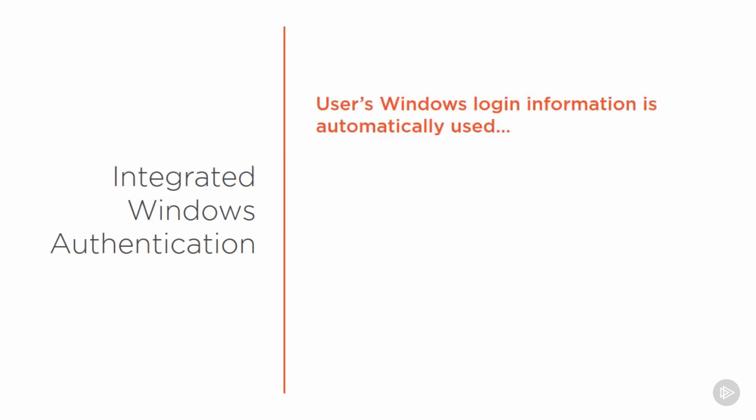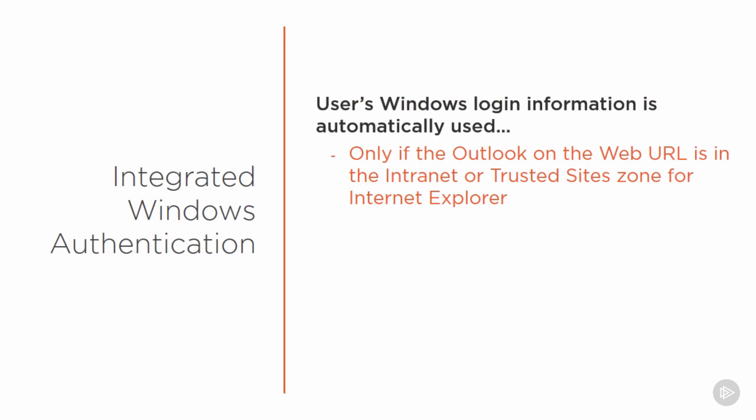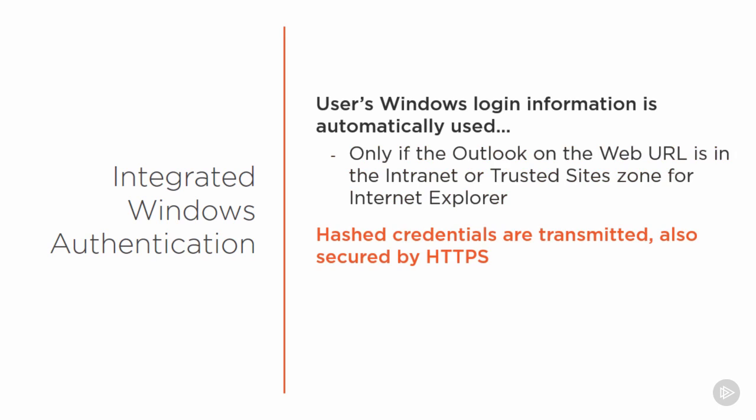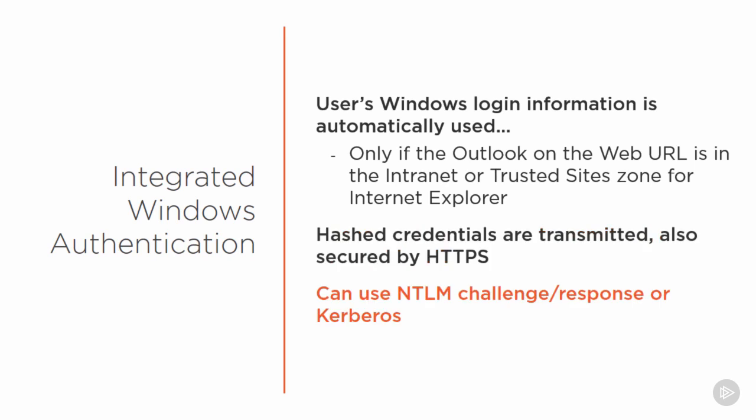There is also Integrated Windows Authentication. When enabled, the user's Windows logon information is automatically used to log them into Outlook on the Web — no username and password prompt — but only if the OWA URL is in the Intranet or Trusted Sites zone in Internet Explorer. Hashed credentials are transmitted over the network, secured by HTTPS. If automatic logon doesn't work, users see a popup prompting credentials, using NTLM or Kerberos under the hood.